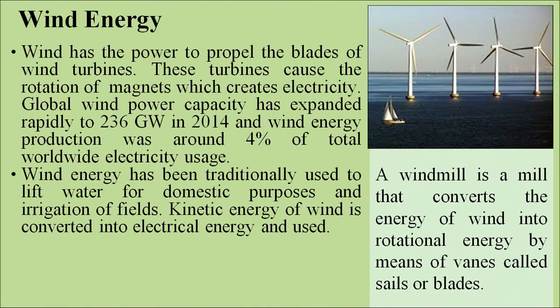Wind has the power to propel the blades of wind turbines. These turbines cause rotation of magnets which create electricity. Global wind power capacity expanded rapidly to 236 gigawatts in 2014 and wind energy production was around 4% of total world electricity usage. A windmill converts the energy of the wind into rotational energy by means of vanes called sails or blades.